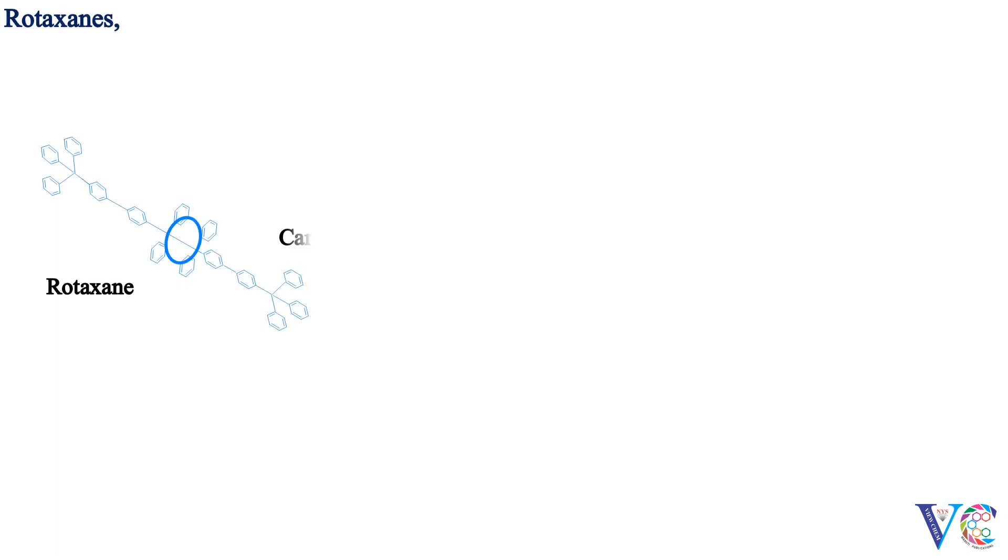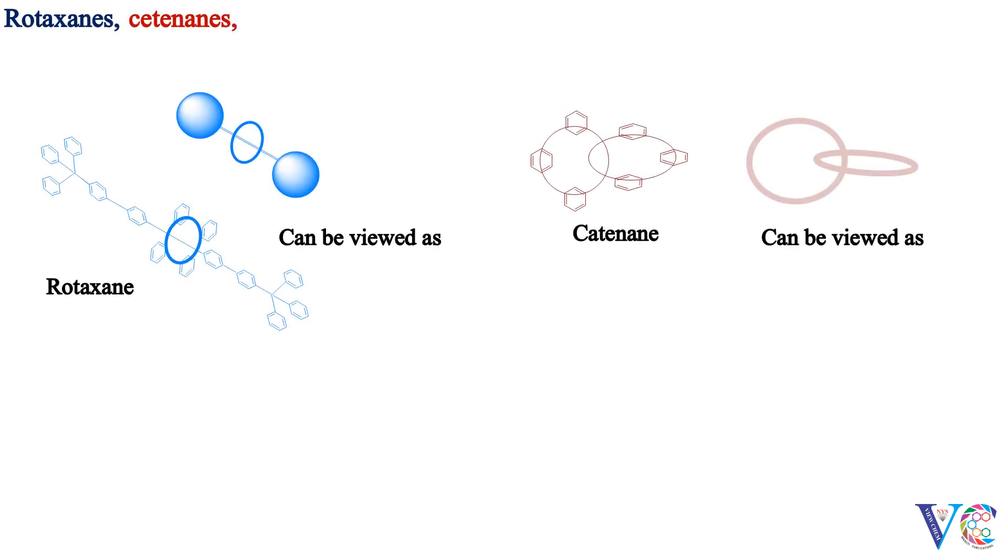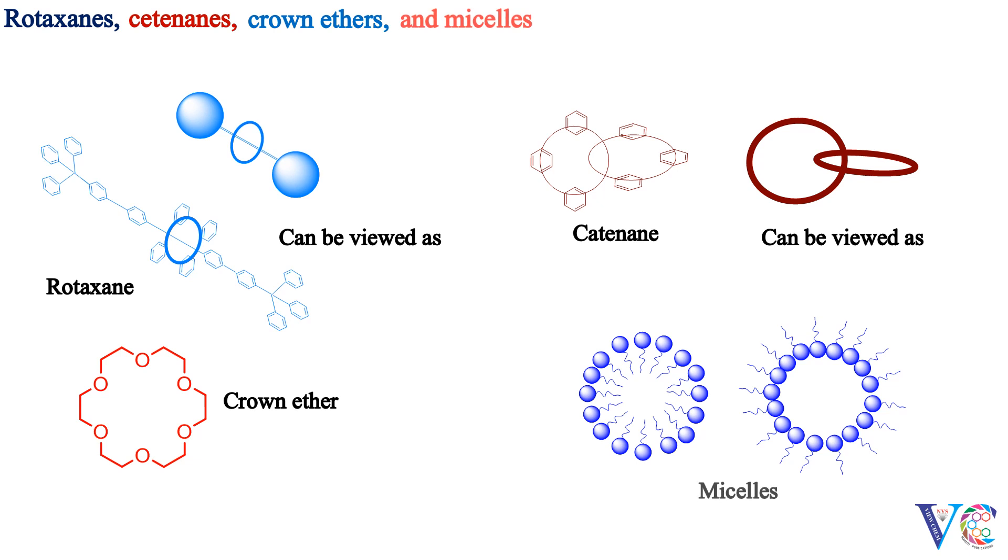Rotaxane, catenane, crown ethers, and micelles are a few examples of supramolecules.